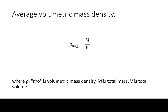The basic formula for average volumetric mass density is rho equals m over V. Rho is the volumetric mass density, m is the total mass, and capital V is the total volume.